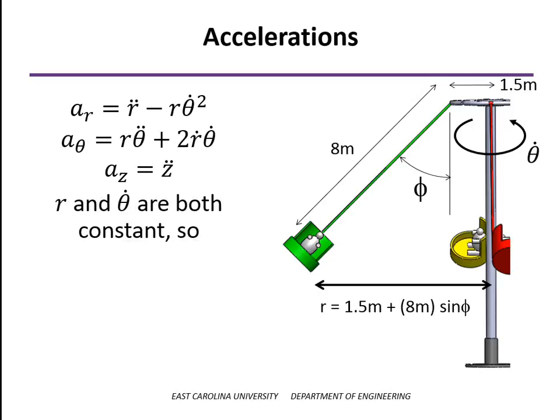We know that the radius is constant. Therefore, r dot and r double dot are going to be equal to zero. We also know that theta dot is constant, so theta double dot will be equal to zero. And because of the fact that the radius is constant, that means that there's no movement in the z direction, so z double dot is going to be constant as well.